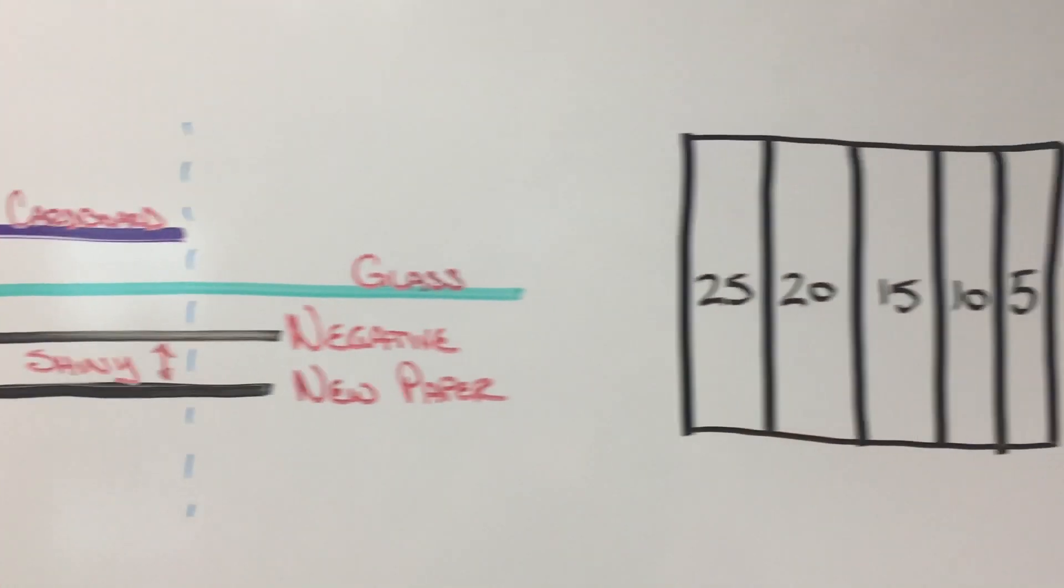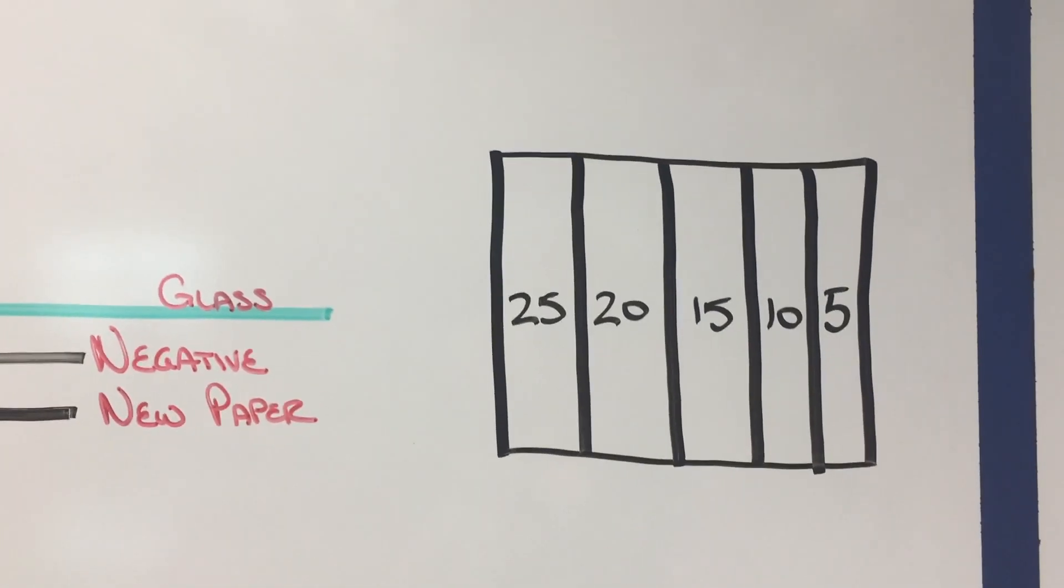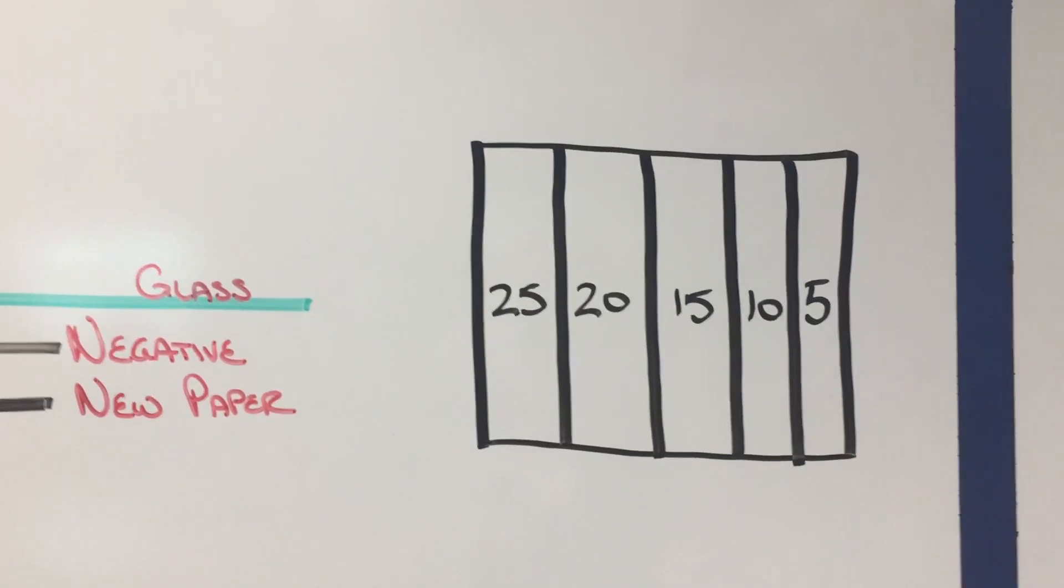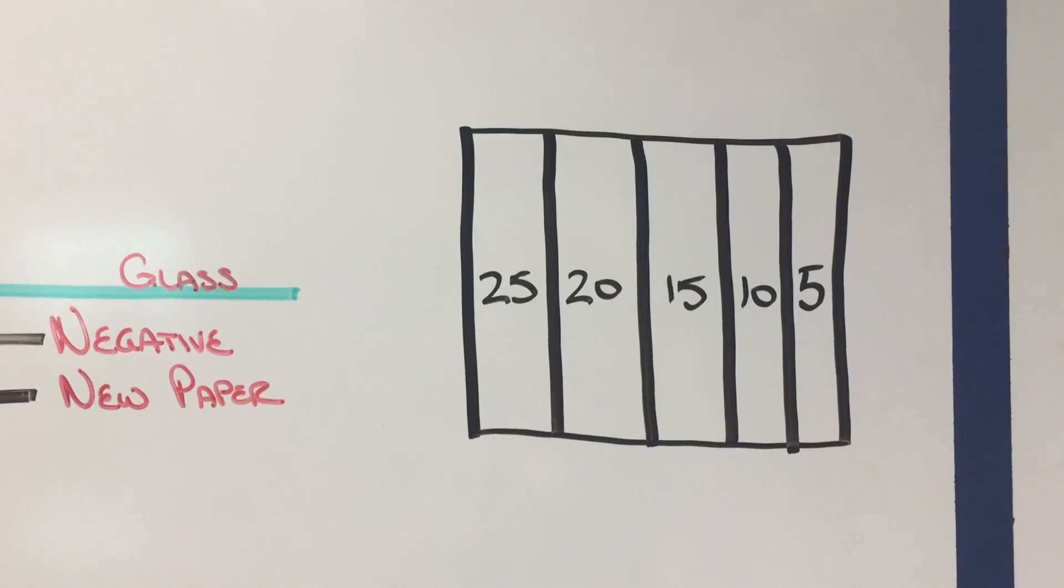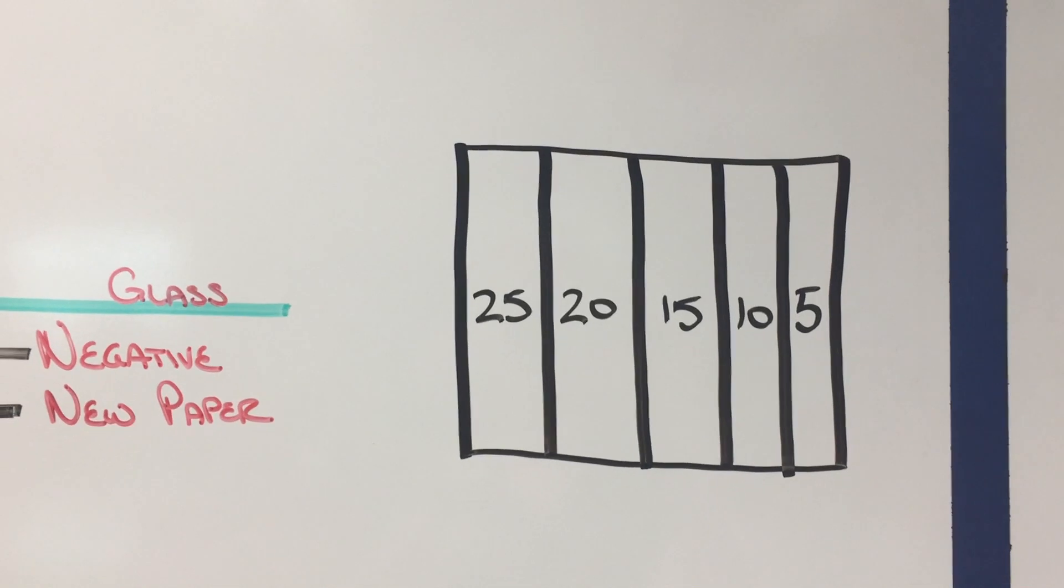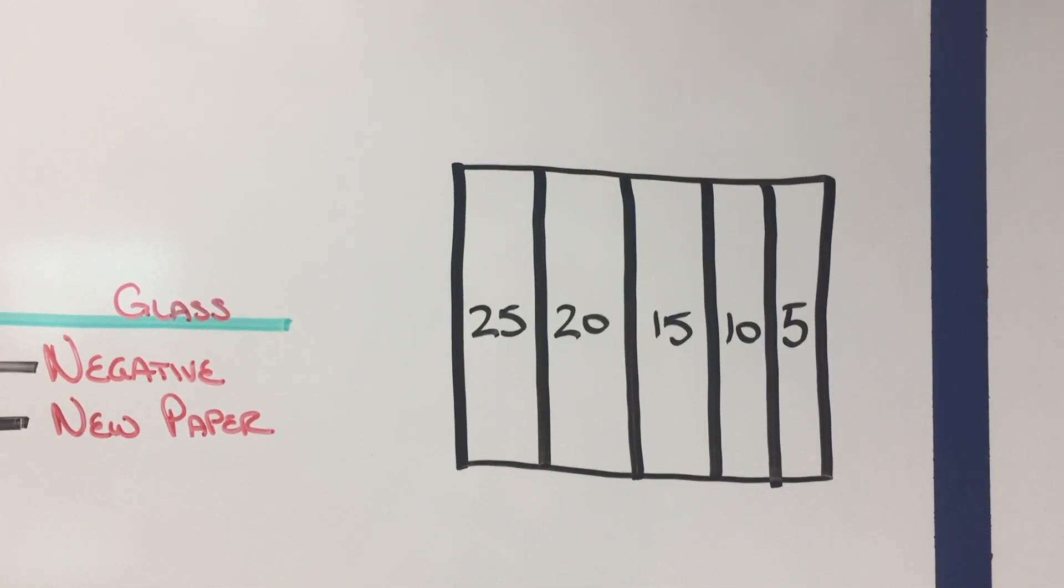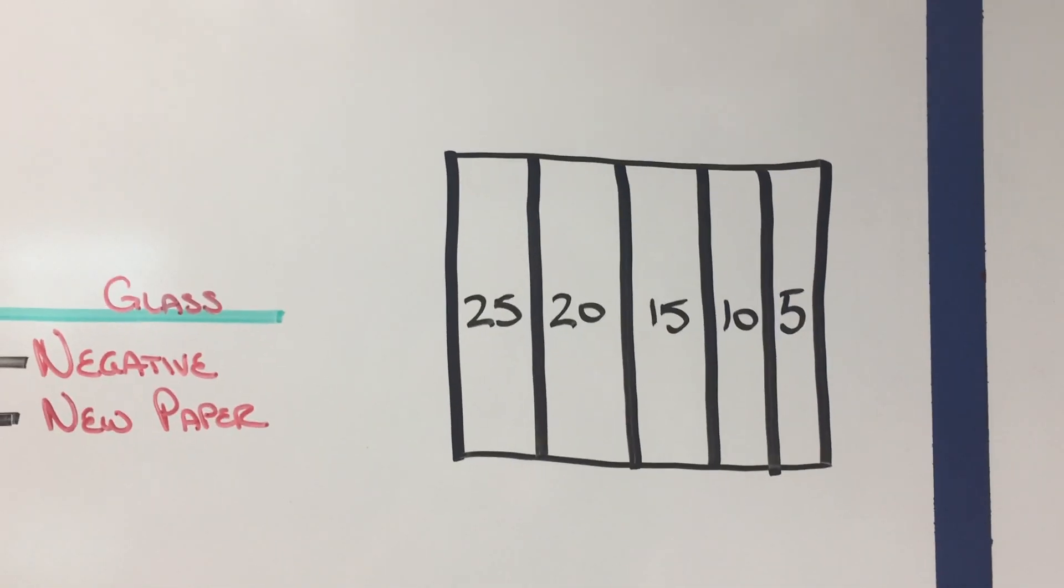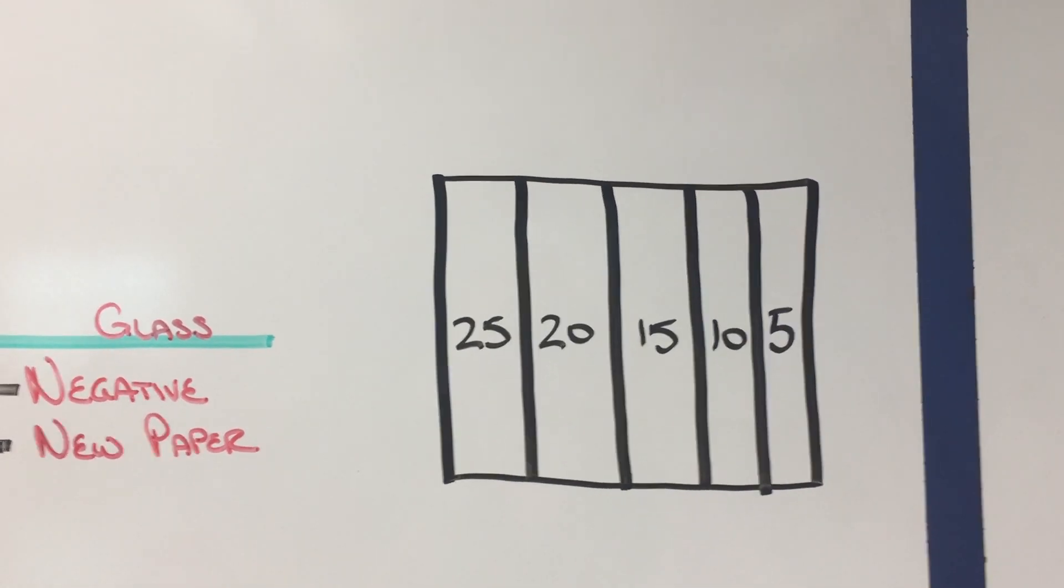So what you're going to end up with is your positive but it's going to have multiple exposure times on it. The last strip that you do will actually be five seconds and you will have a 10 second one and a 15, 20, maybe 25 and that depends on how wide you make the strips.